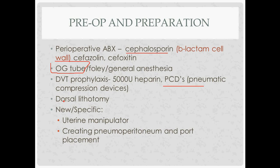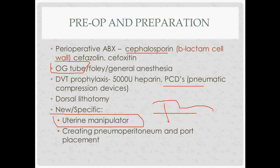A procedure-specific tool is the uterine manipulator — a tool inserted into the uterus to move it around during the laparoscopic approach, since you can't use large clamps like Kocher clamps to manipulate the uterus. Then you create the pneumoperitoneum and place your ports.